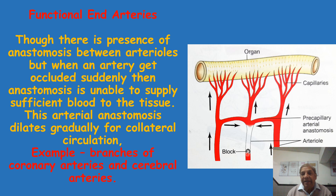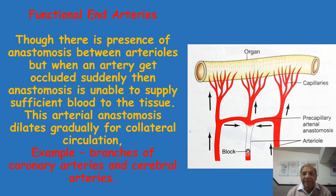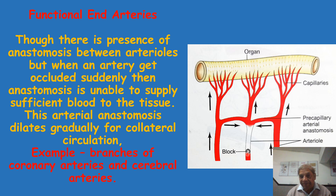These functional end arteries are present in two very important organs that you should not forget. One is the heart — the heart is supplied by the coronary arteries, and the branches of the coronary arteries at the arteriolar level are functional end arteries. That means anastomosis is there but it is not sufficient. Similarly, the second important organ is our brain — the cortical branches of the cerebral artery which supply our brain are also functional end arteries.